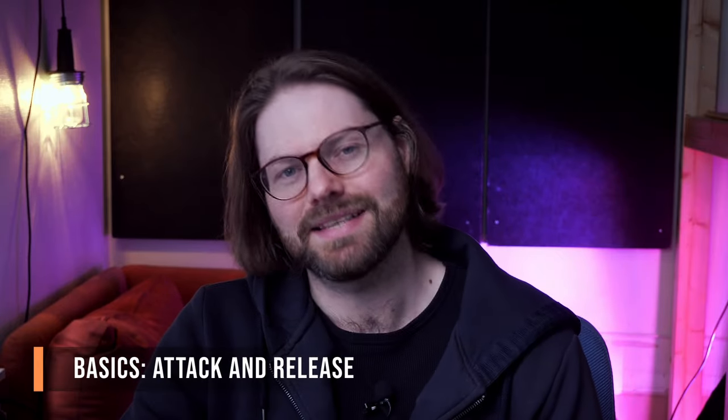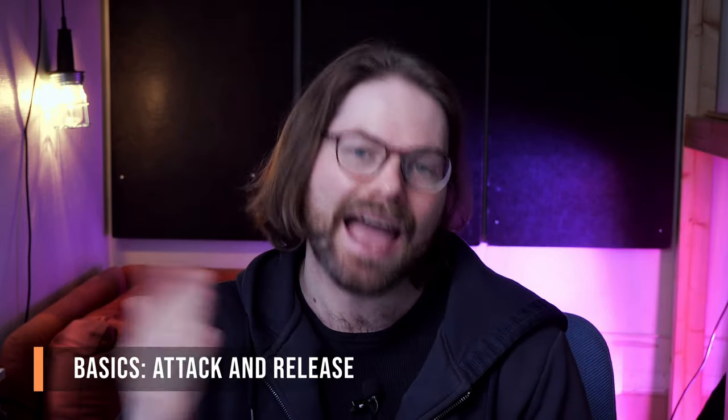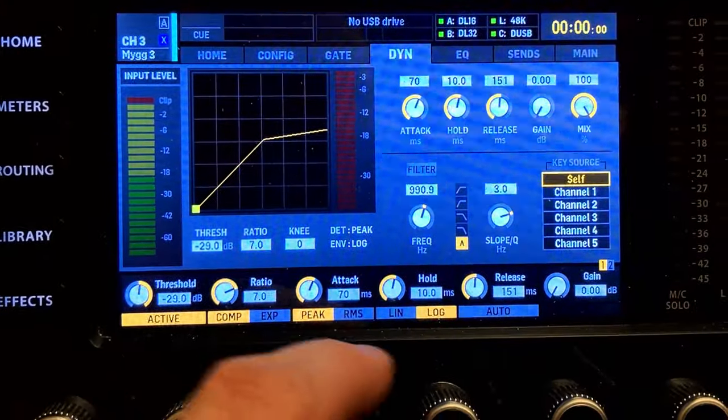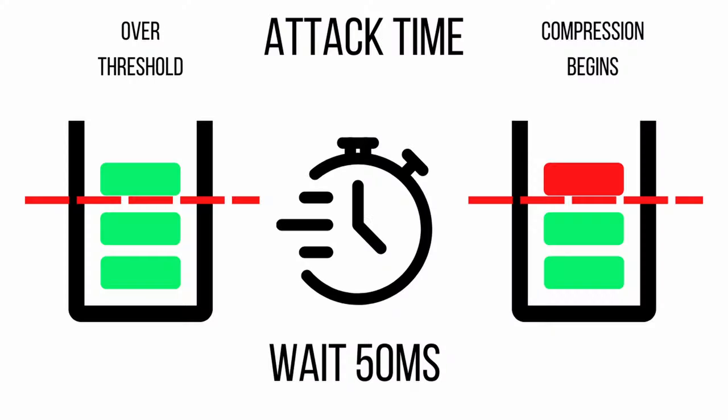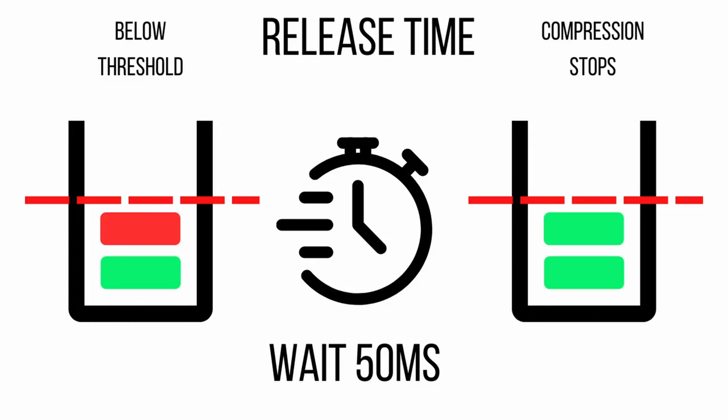We have a couple of other really important basic settings on a compressor: the attack time and the release time. The attack time is how quickly the compressor activates once the gain has crossed the threshold. So as soon as your gain trips over minus 18 dB, how quickly does the compressor get into action? The release time is the opposite — once the gain drops below the threshold again, how quickly does the compression stop? Let's think about a snare drum. When you hit the snare drum, there's the initial impact — the attack — and then there's the tail as the drum rings out.